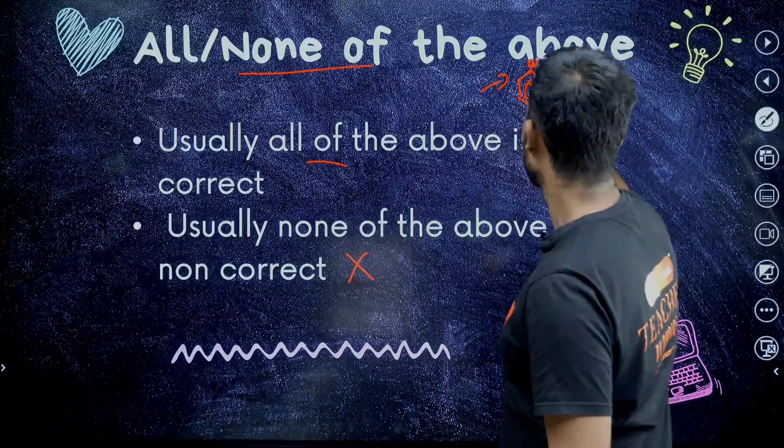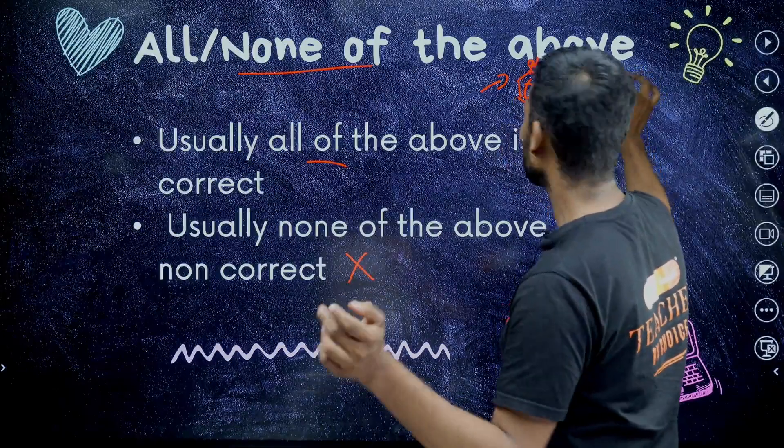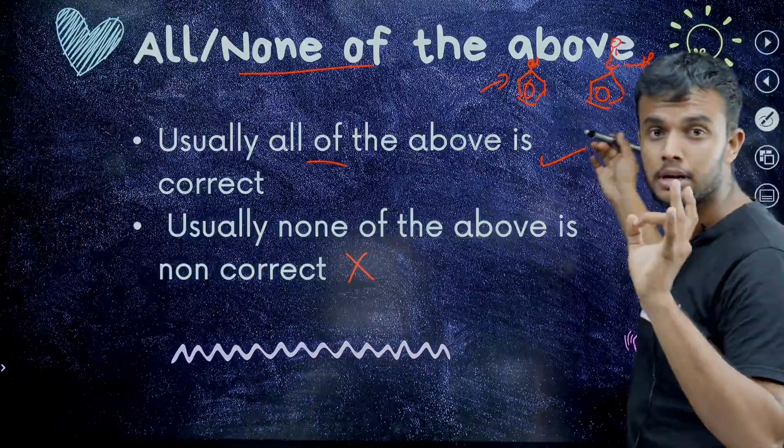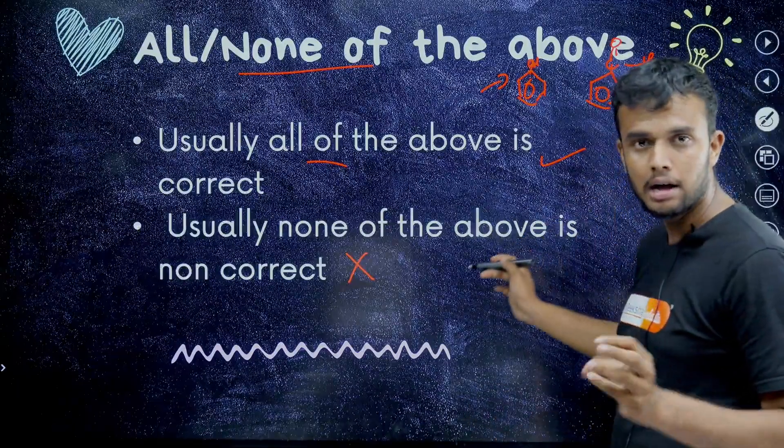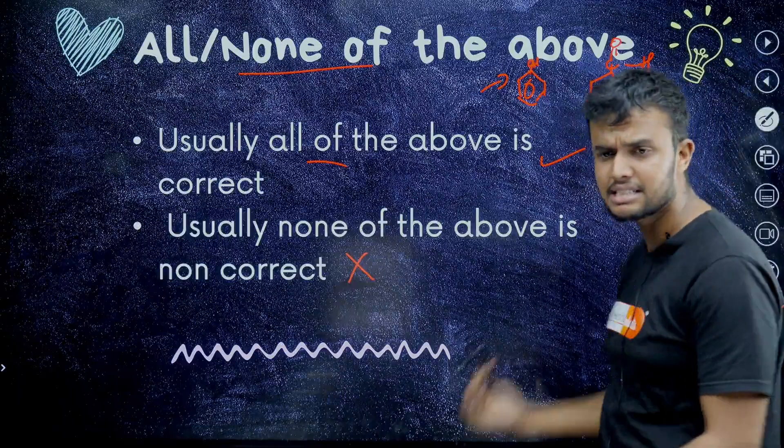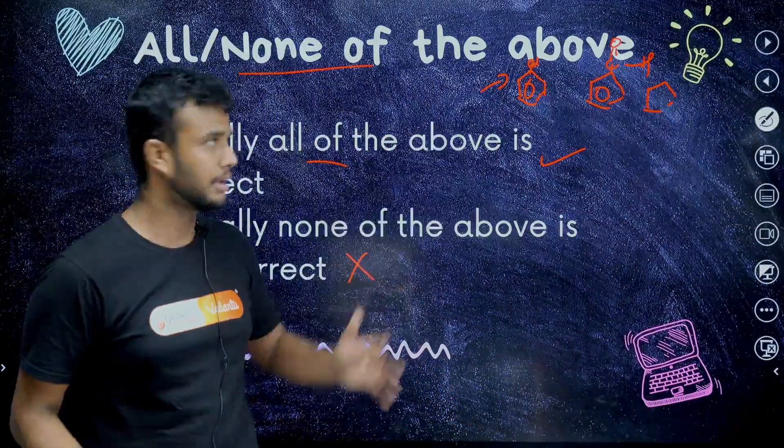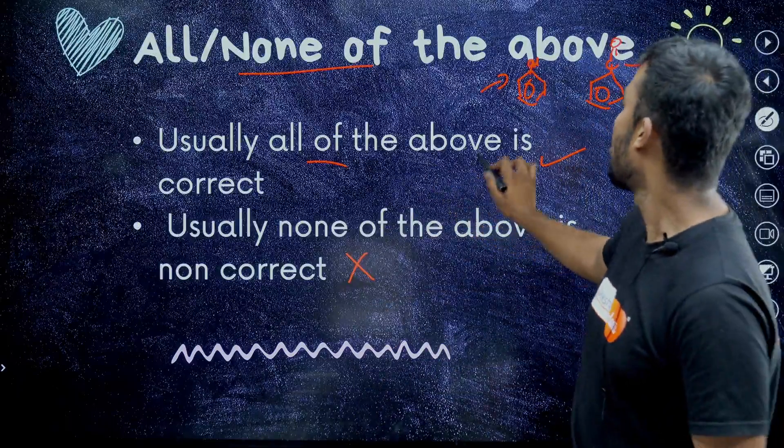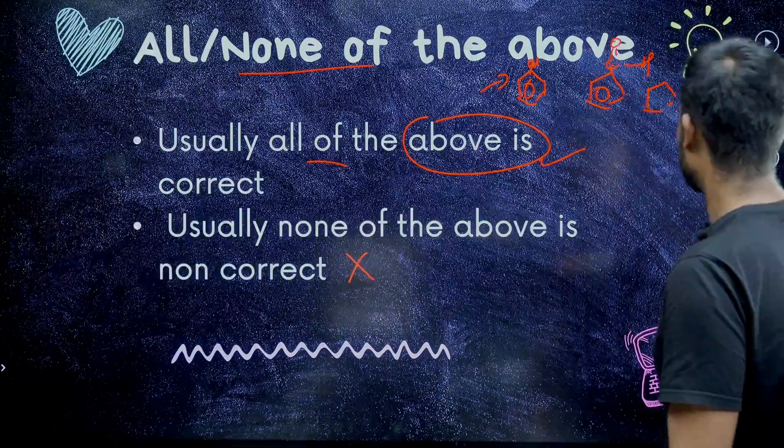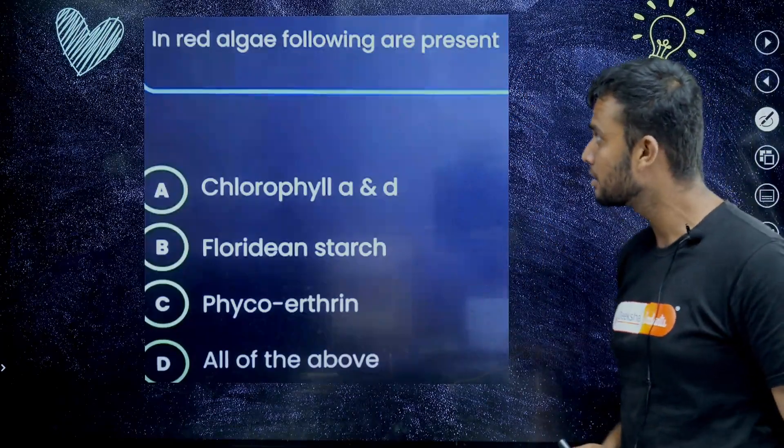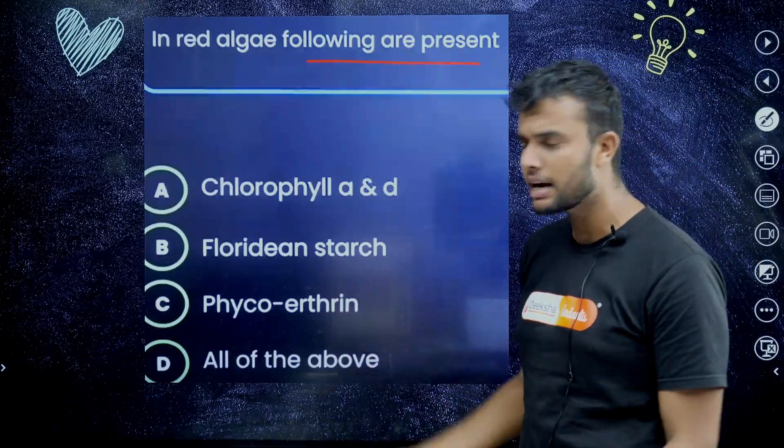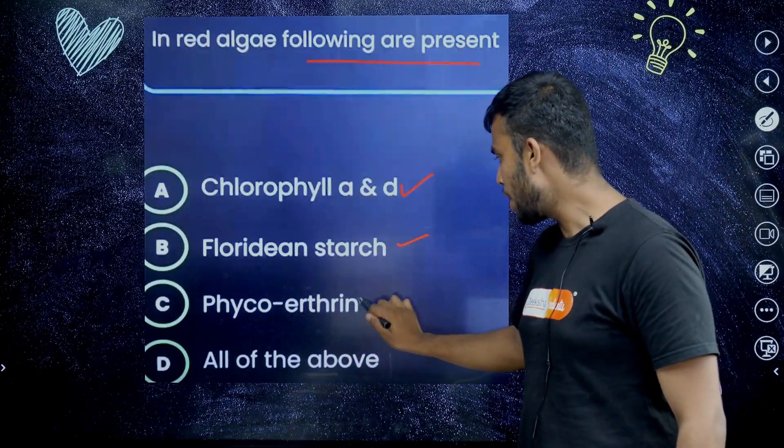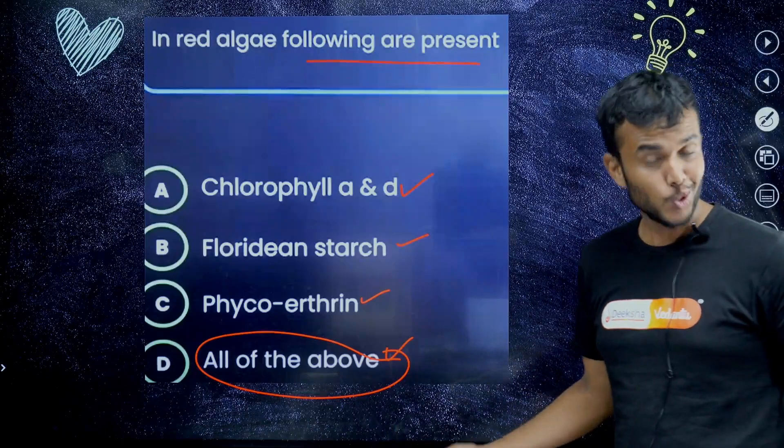For example, they give some electron withdrawing group metals and one electron donating group metal. One phenol group is there. In another case we have some electron withdrawing group. They ask some question, in which option A, B, C, D they give option. It shows inductive effect, either it shows negative inductive effect or positive induction. Most of the time all of the above is correct and none of the above is incorrect. For example, look here. The question: in red algae following are present. It is a bio question. Chlorophyll A and B, floridean starch, and all of the above. All of the above is correct.